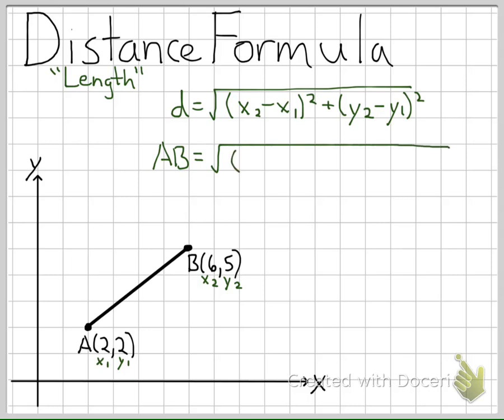For x2 it's going to be 6 minus x1 which is 2, and that's squared. Plus my y values would be 5 minus 2, and that's squared.